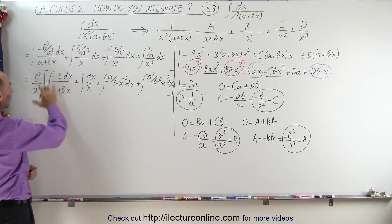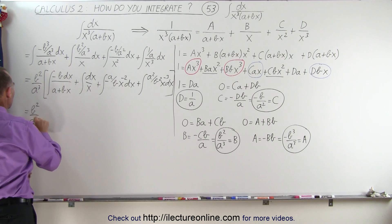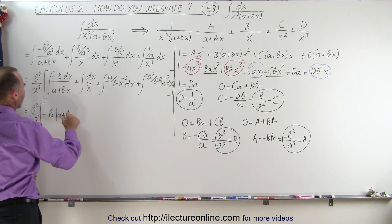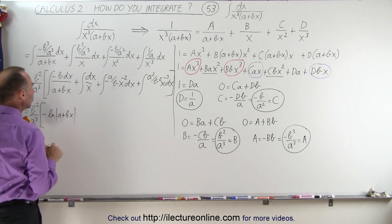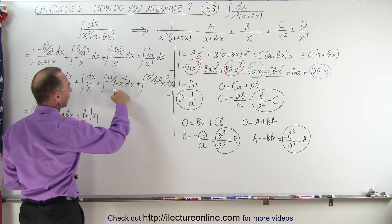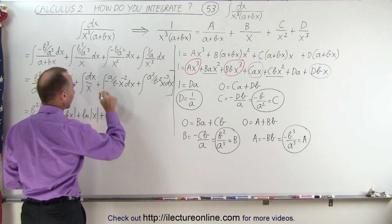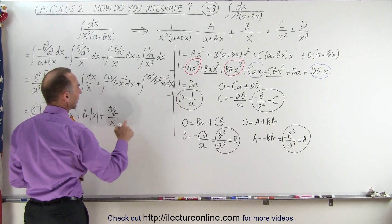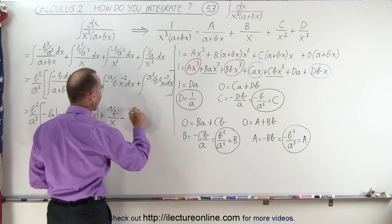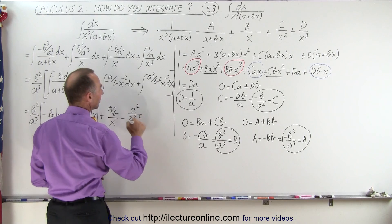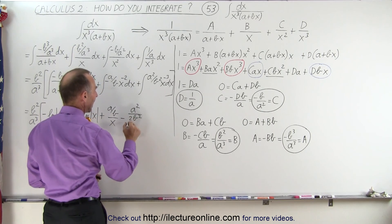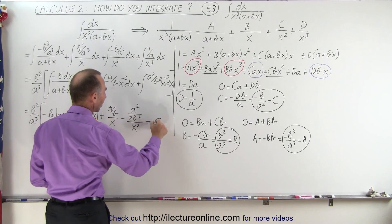Now we're going to integrate. This becomes b squared over a cubed times the negative of the natural log of a plus bx. Notice we have a bx here, so we need a bx in the numerator. Here we get plus the natural log of x. Here we end up with a negative, which cancels the other negative, becoming plus a over b divided by x. And here this becomes x squared in the denominator, but we also need a negative 2, so that would be minus a squared over 2b squared, because we have x to the minus 2 divided by the new exponent minus 2, giving us x squared in the denominator, plus a constant of integration.